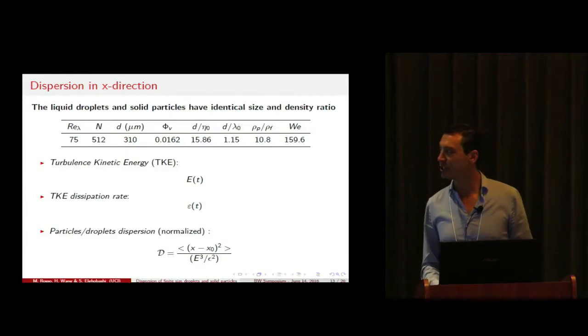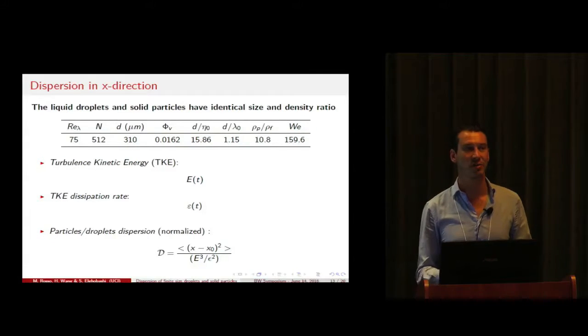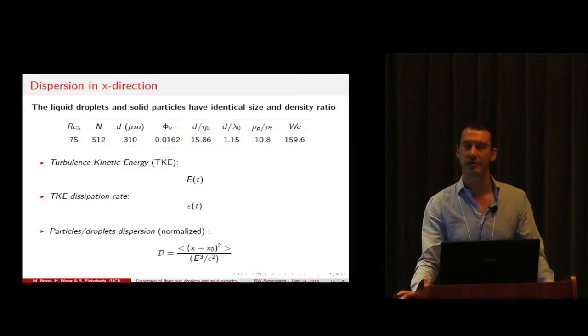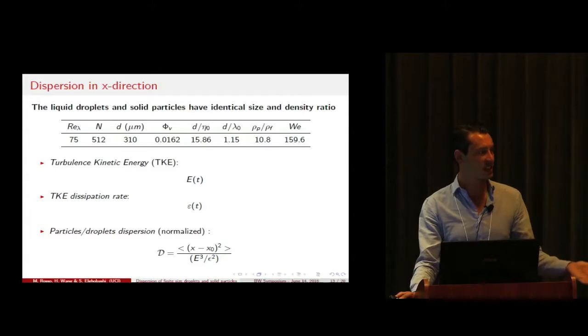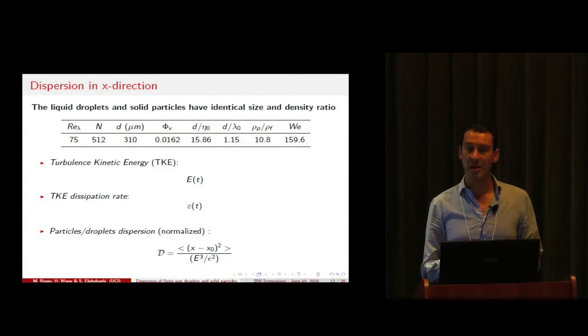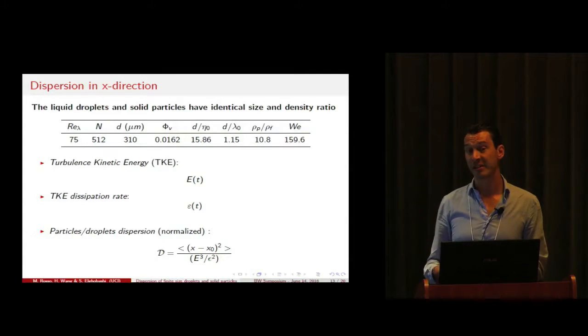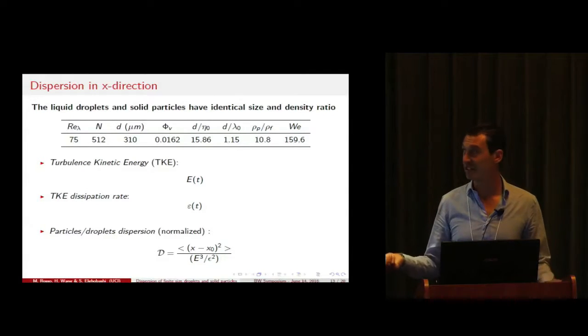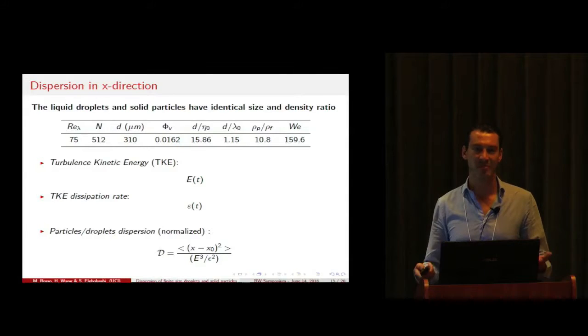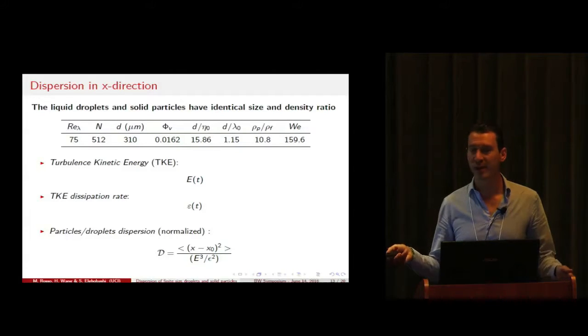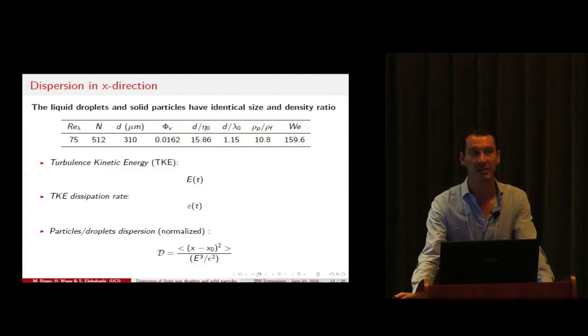Now I can show you some of the results. We are interested in comparing the dispersion characteristics of spherical particles and droplets in isotropic turbulence. The method I described will be used to simulate the droplets in turbulence, while for spherical particles we used an IBM method coupled with a flow solver, which was part of Lucci's paper that I briefly introduced at the beginning.